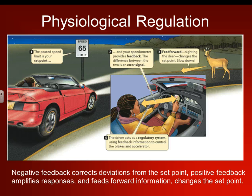Feed forward is sighting the deer — something feeding towards you, a signal coming towards you — which changes the set point and tells you to slow down. And four, the driver acts as a regulatory system. Using feedback such as looking at the speedometer and seeing the deer, the driver controls the brakes and accelerator — how fast to go, slowing down, swerving to miss the deer.